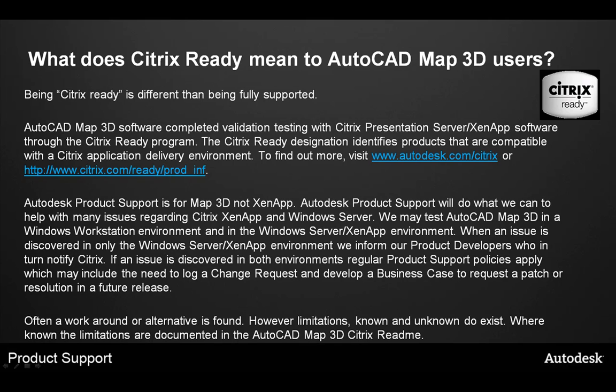What does Citrix ready mean to AutoCAD Map 3D users? AutoCAD Map 3D software completed validation testing with Citrix Presentation Server ZenApp software through the Citrix ready program. The Citrix ready designation identifies products compatible with the Citrix application delivery environment. Being Citrix ready is different than fully supported. Product support provides support for Map 3D or Raster Design — we are not providing support for Windows Server, Terminal Services, Internet Information Services, Citrix ZenApp, or Presentation Server. Product support tests customer service requests on a workstation and in ZenApp. If an issue is unique to the Citrix environment, we report it to Citrix. If the issue happens in both environments, normal product support procedures apply — we provide a solution, a workaround, or log a change request with development and escalate as necessary. I have not seen a problem that prevents Map 3D from running in this environment; there is often a workaround or alternative.